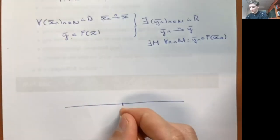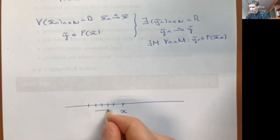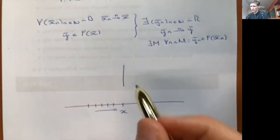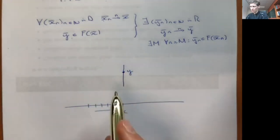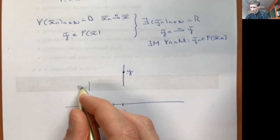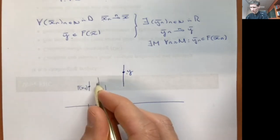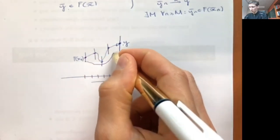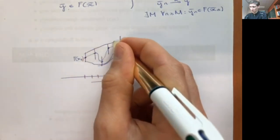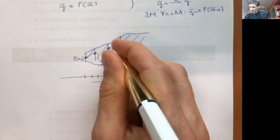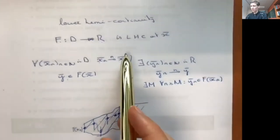So we start with a sequence converging to x and take a y in the correspondence of this limiting vector. Then we should be able to construct a sequence that converges to this y, and from some point onwards, every y_n is in the correspondence of the corresponding x_n. Pictorially: we have x, a sequence converging to x, and f of x. We take any y in this correspondence, and we should be able to generate a sequence of y's — from f(x_1), f(x_2), f(x_3) — that converges to y. That's the notion of lower hemicontinuity.